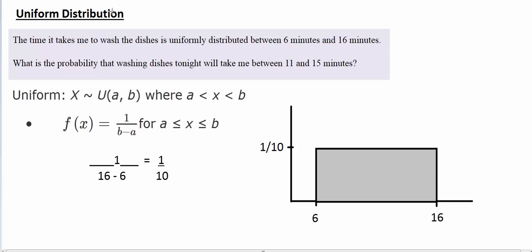This particular question asks us: What is the probability that washing dishes will take between 11 and 15 minutes? So I'm going to mark 11 here and 15 here. I will color that section red. There we go. Let me number it off here. So this is 11, and this is 15. We want to know the probability for this area.